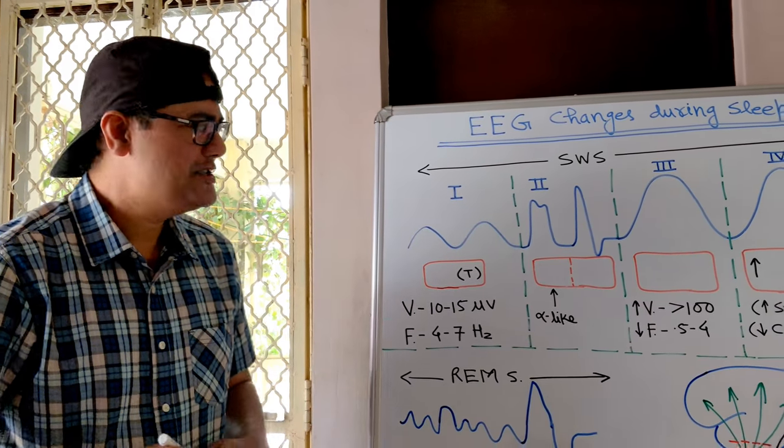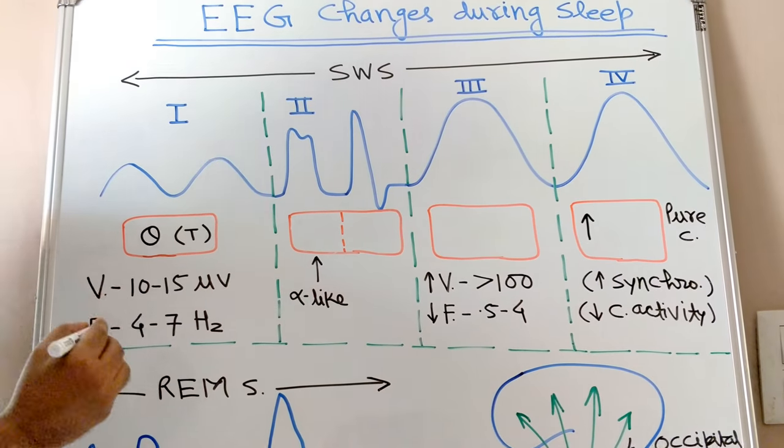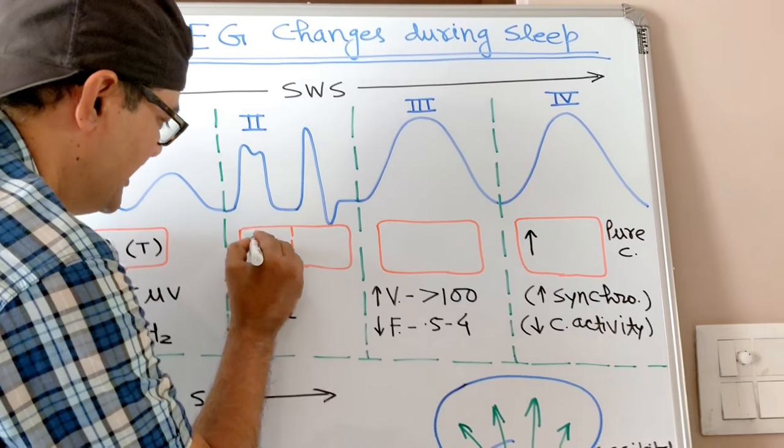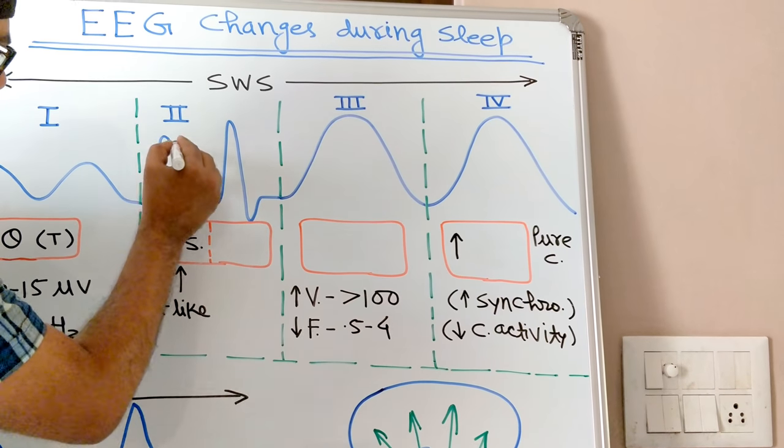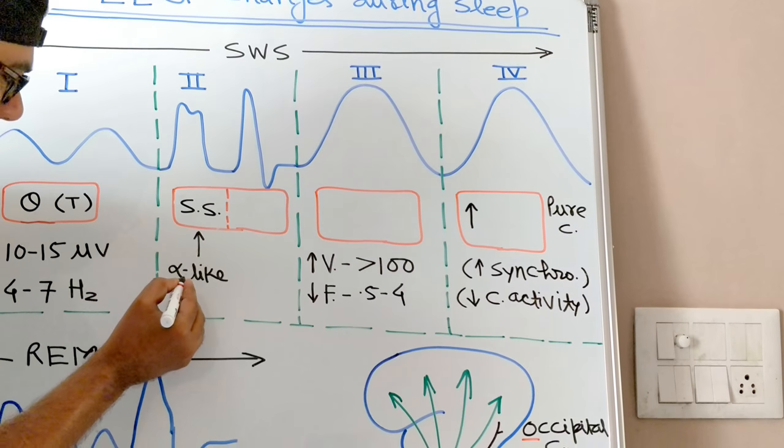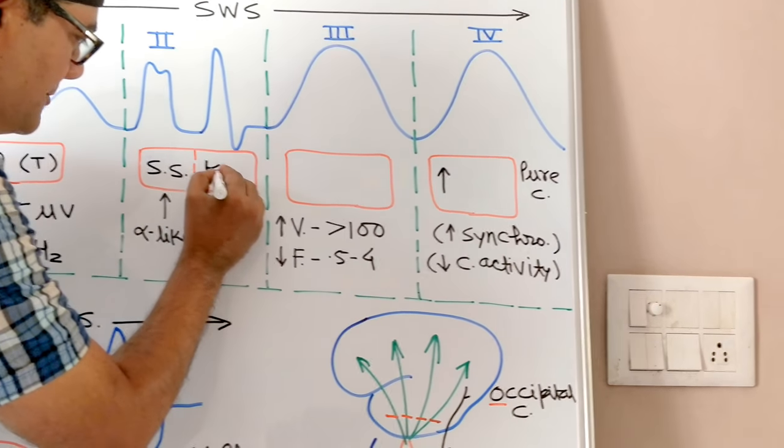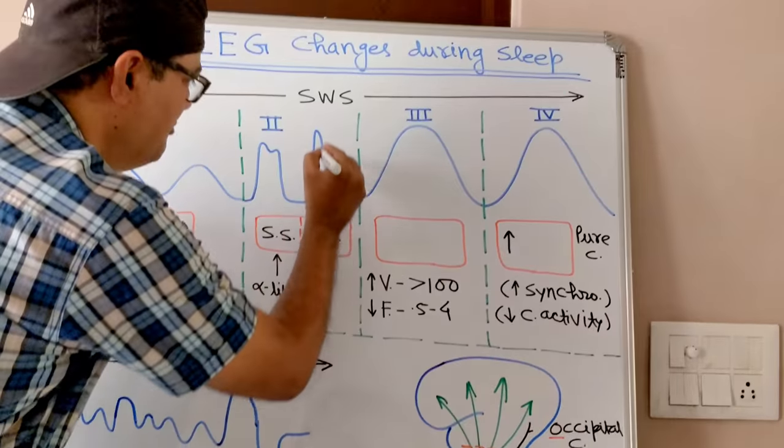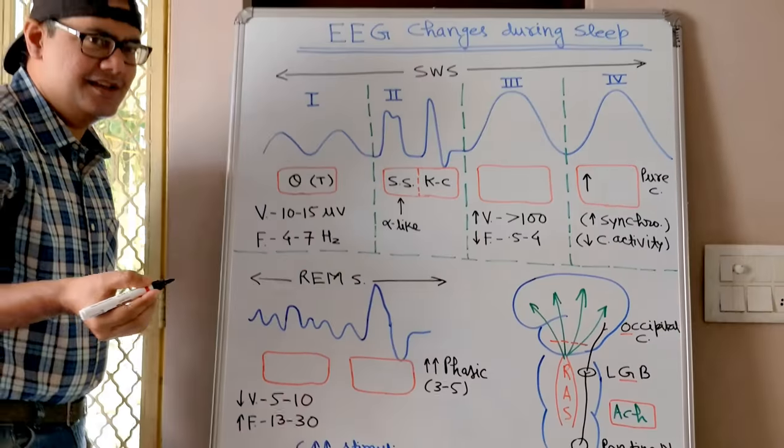EEG changes during sleep slow wave sleep. In stage one we are having theta waves. In stage two, two things: sleep spindles. Sleep spindles are sine wave shaped but they are alpha-like in frequency and voltage, along with occasionally K complexes. K complexes are high voltage biphasic EEG changes. We can do a mnemonic here suppose